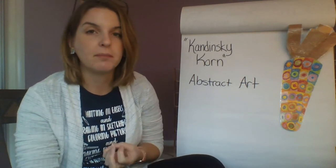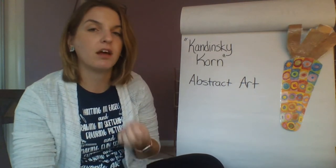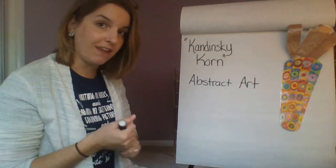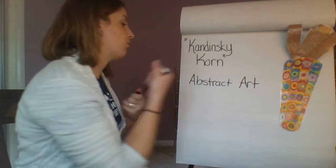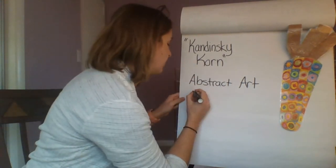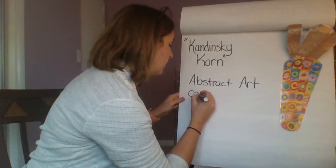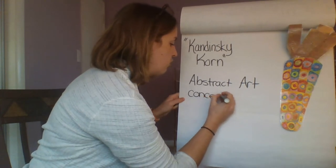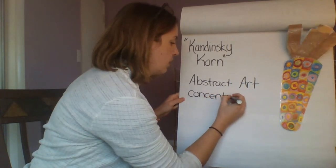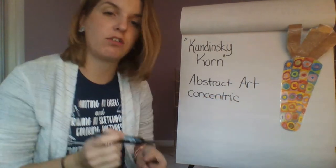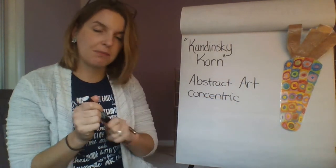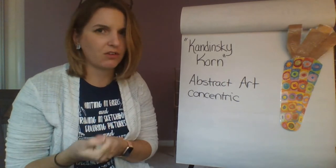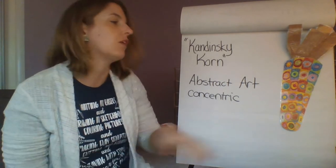A lot of his artwork had different shapes, colors, and lines going all over the paper to express pieces of music he loved. One work he's very famous for is called his Concentric Circles — which basically means circles within circles within circles within circles.